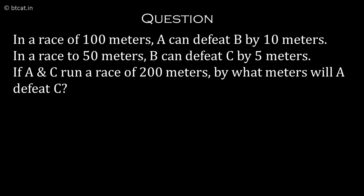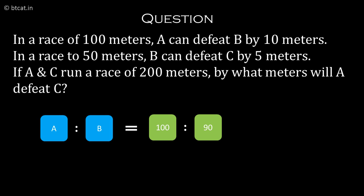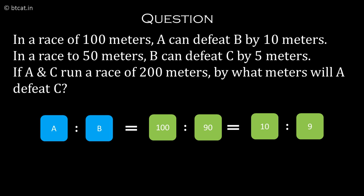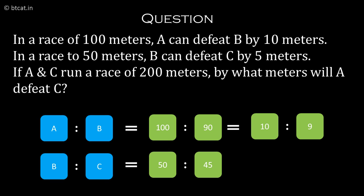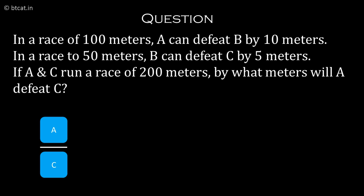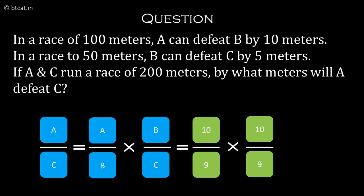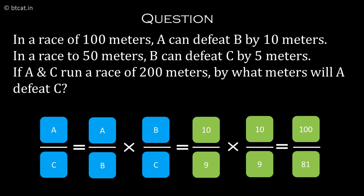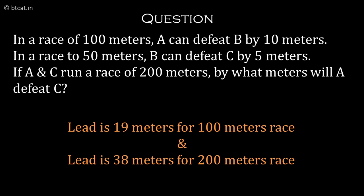First, A to B is 100 to 90, because in a race of 100 A is defeating B by 10 meters, so A to B is 10 to 9. Similarly, B to C is 50 to 45, which is again 10 to 9. Therefore, A to C equals (10/9) × (10/9) = 100 to 81. Therefore the lead given is 19 meters.